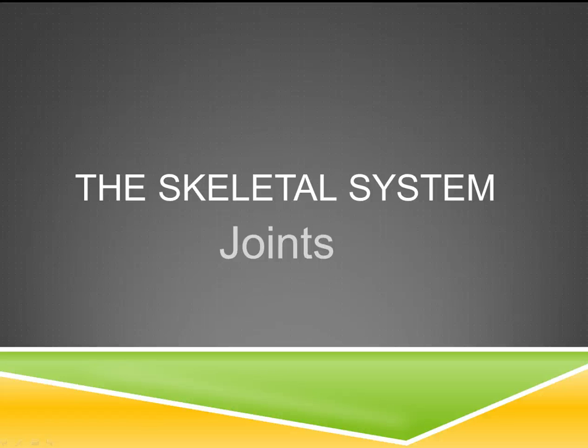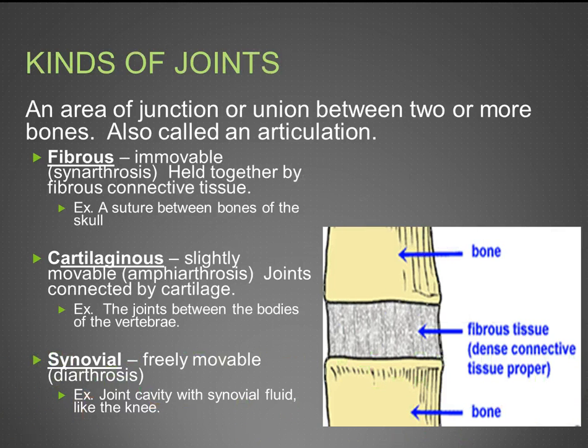This is our second video of the skeletal system. Today we're going to talk about joints. A joint is an area of junction or union between two or more bones, also called an articulation.